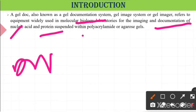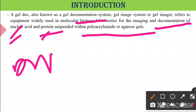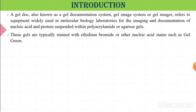The gel documentation system is used in the molecular biology laboratory for imaging and documentation of nucleic acids — meaning DNA and RNA — and proteins suspended within polyacrylamide or agarose gel. First we perform agarose gel electrophoresis, then after finishing the electrophoresis we use the gel documentation system to see the bands. These gels are typically stained with ethidium bromide or other nucleic acid stains such as gel green.